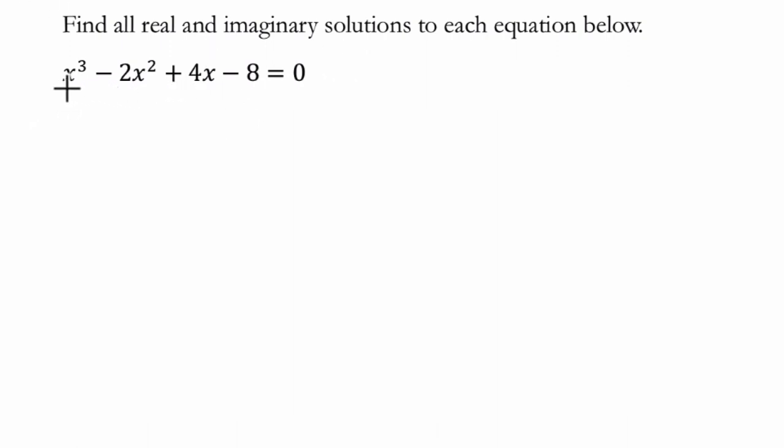The way I factor by grouping is I try to write all the terms in power order, so the third power, second power, first power, and you could say this is x to the zero power. So I've got that done. Then I try to look in my pairs, I've got this pair and this pair, and I say to myself, is there something I can factor out of both of them?